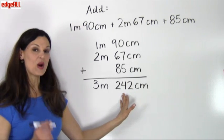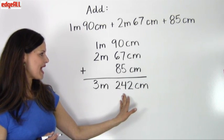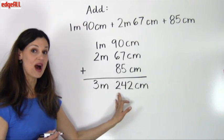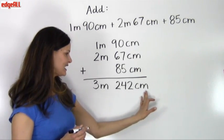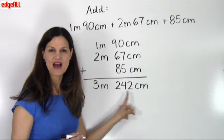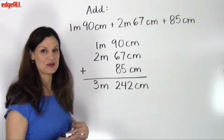And in this case, when I look at the 242 centimeters, I know that 100 centimeters equals 1 meter. So when I see in here that I have 242 centimeters, I can see that 200 of those centimeters can be converted over to meters.